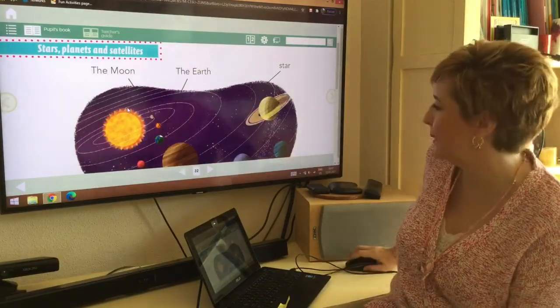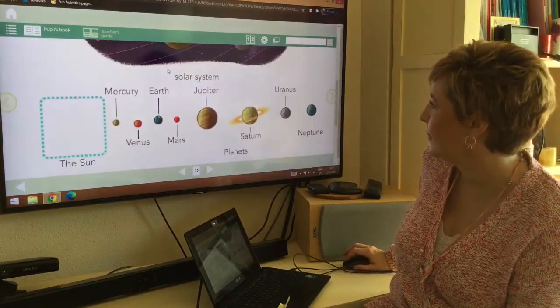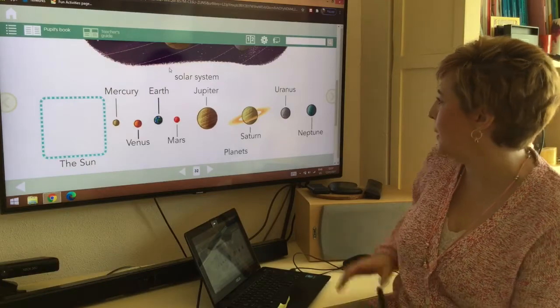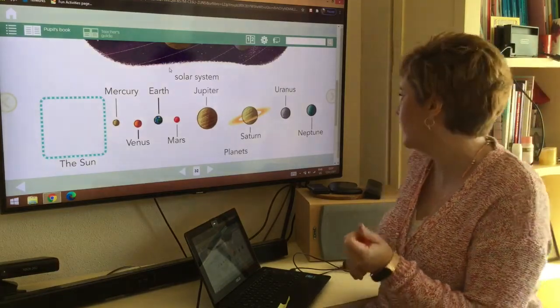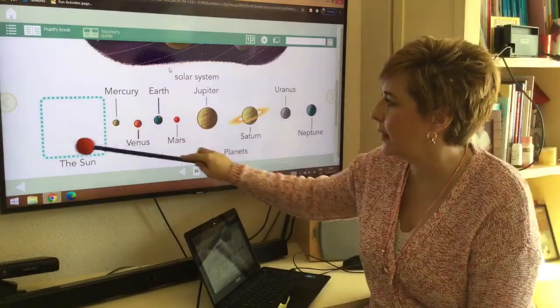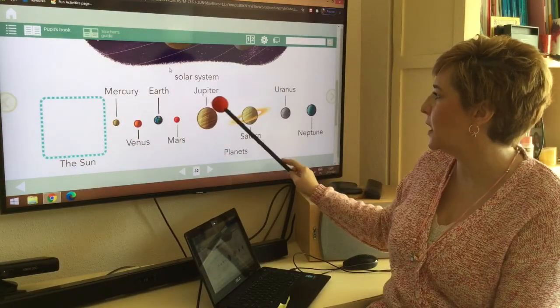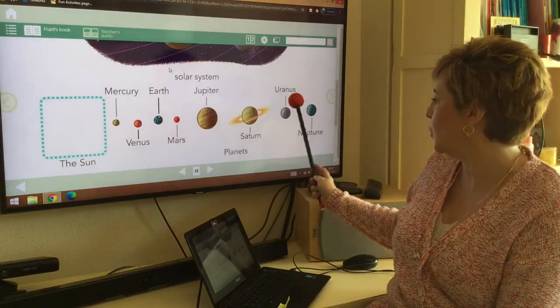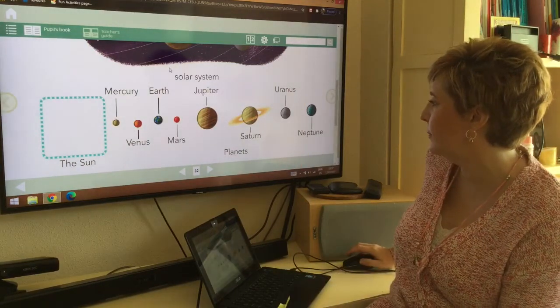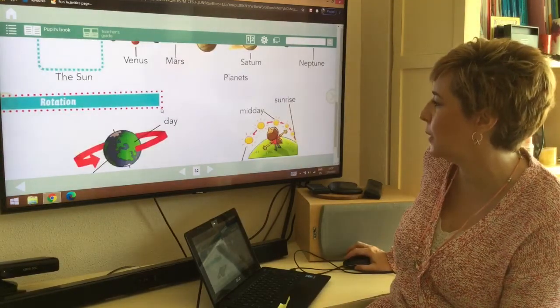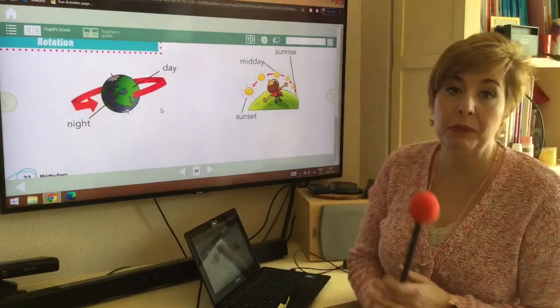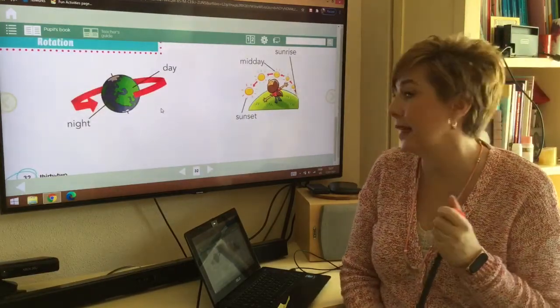This is the solar system. We have here the Sun, then we have Mercury, Venus, Earth, Mars, Jupiter, Saturn, Uranus, Neptune. Those are the planets in the solar system.